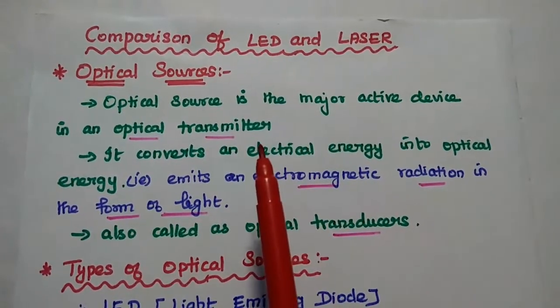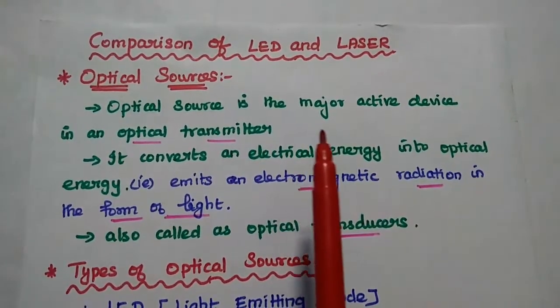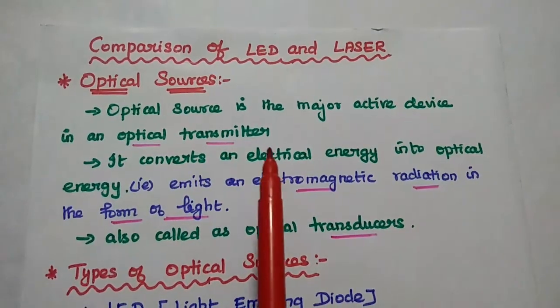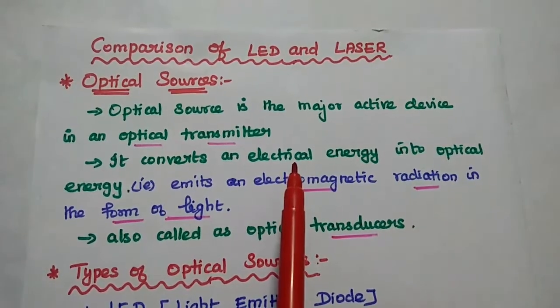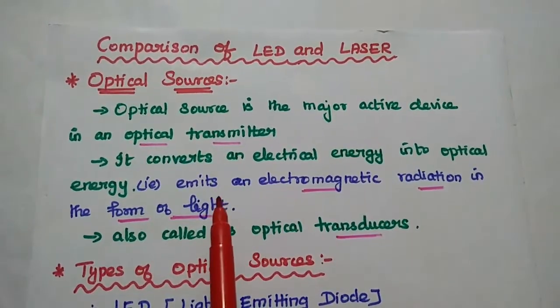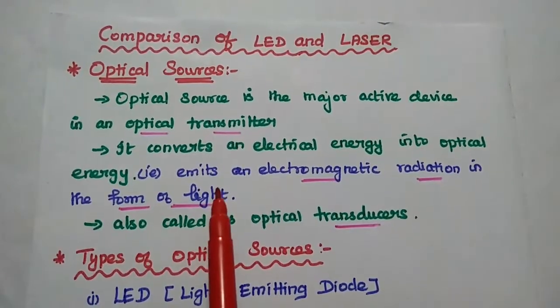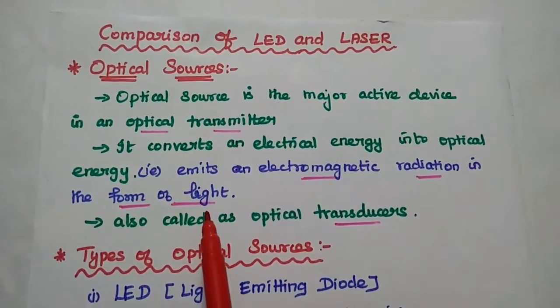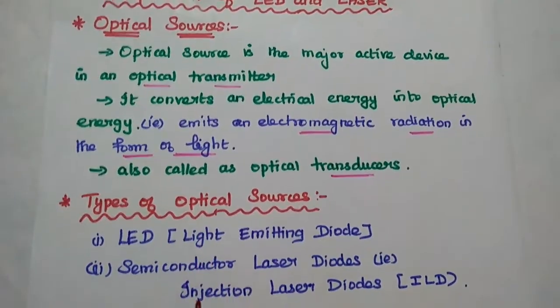Dear students, now we are going to discuss the comparison of optical sources, LED and laser. Let's start with the basics of optical sources. Optical source plays a vital role in an optical communication system. Especially in an optical transmitter site, it converts electrical energy into optical energy. It emits electromagnetic radiation in the form of light. It is also called as optical transducer.